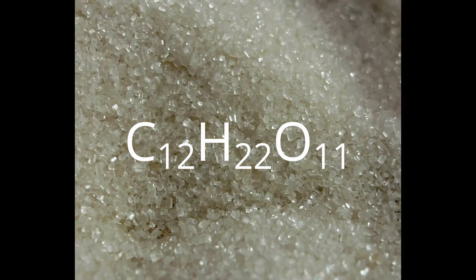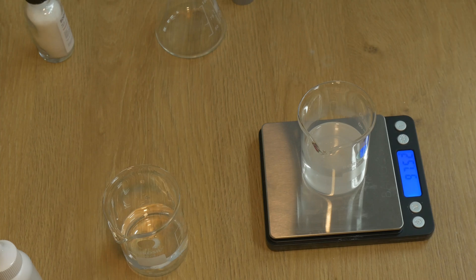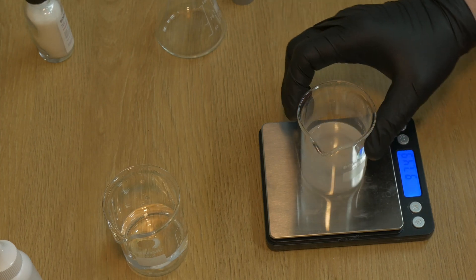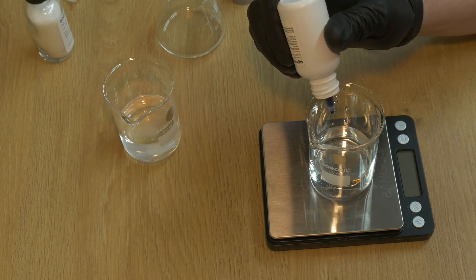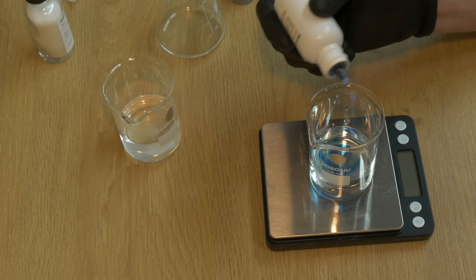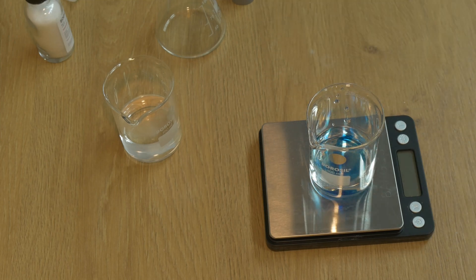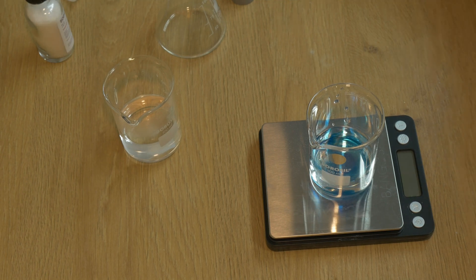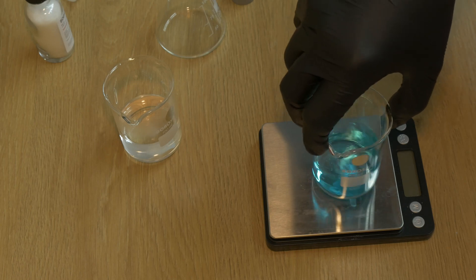Unlike glucose, sucrose does not have a free aldehyde or ketone group, meaning it lacks the necessary structure to participate in redox reactions, which makes it a non-reducing sugar — a sugar that does not donate electrons and cannot directly take part in oxidation-reduction reactions. This structural difference prevents sucrose from directly participating in redox reactions unless it is first broken down into its component sugars.